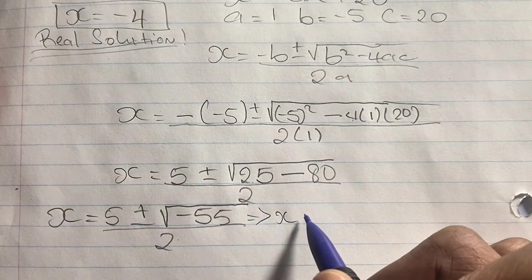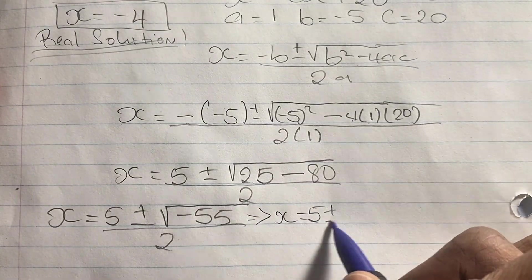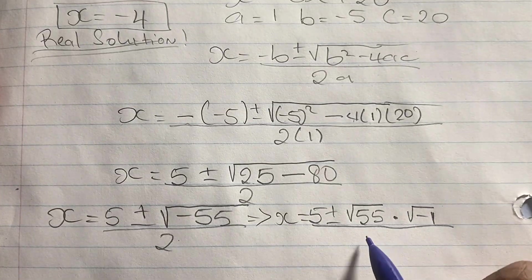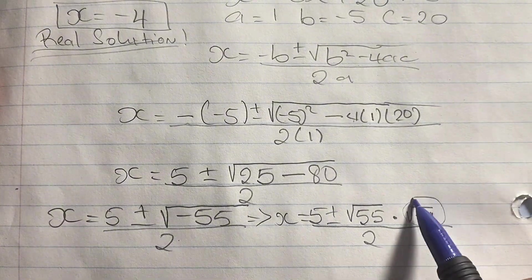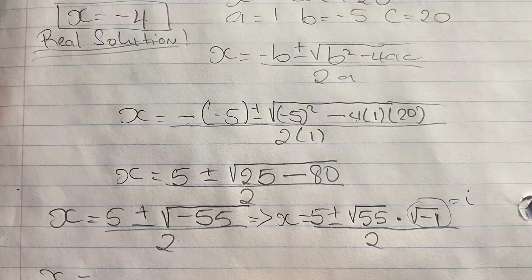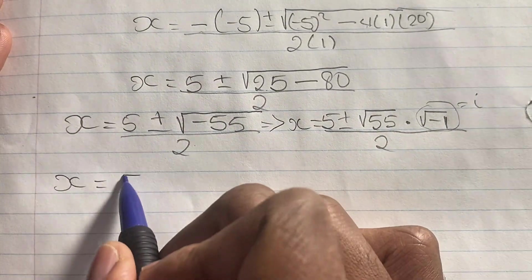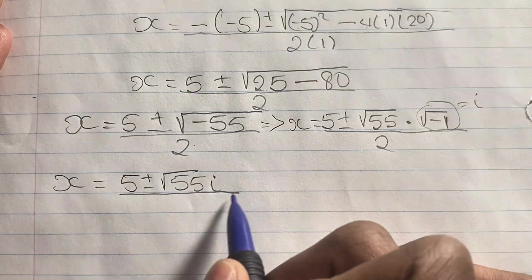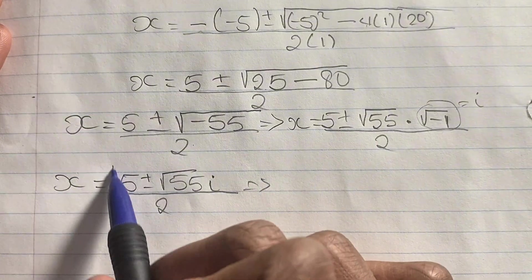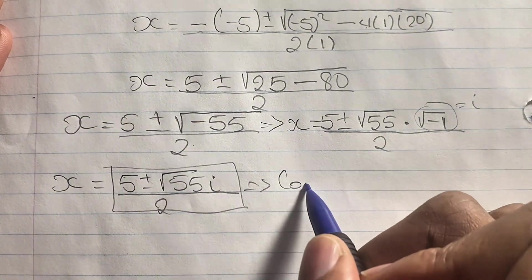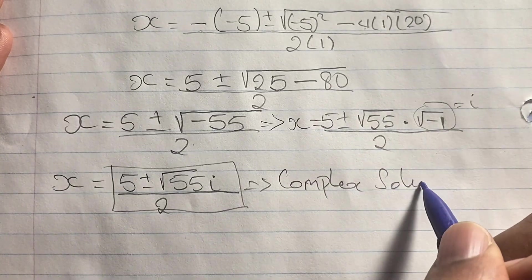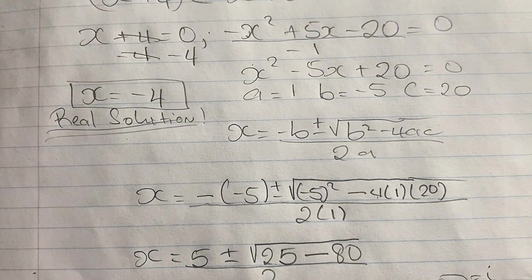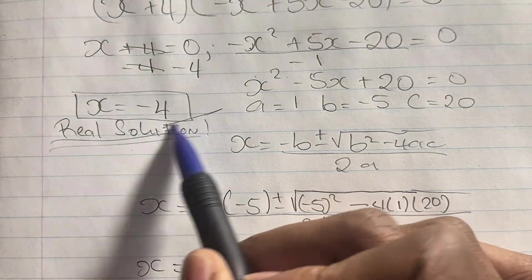We simplify further: the square root of negative 55 becomes the square root of 55 times the square root of negative 1. Since the square root of negative 1 is the imaginary number i, we get x equals 5 plus or minus the square root of 55 times i, all over 2. These are complex solutions because they contain the imaginary number i. Our real solution remains x = −4.